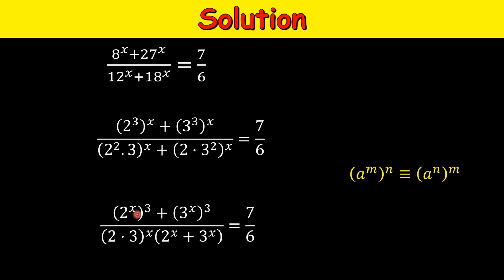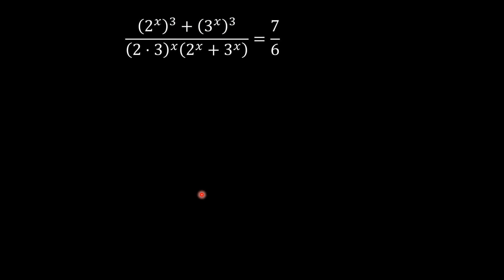Now you see this is a³ + b³ form, so we can write the numerator as a + b multiplied by a² + b² - ab. Let's rewrite it and the denominator remains the same. We have just expanded 2 × 3 × x. Now these two terms can be canceled since these are non-zero.